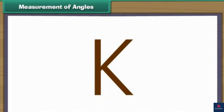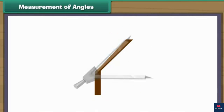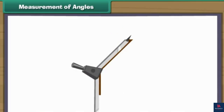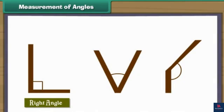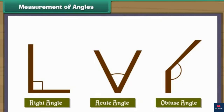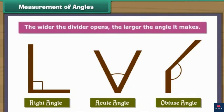Now consider the letter K of the English alphabet — let us modify it. Place the divider on the figure such that one of its arms and common point coincide with one of the arms and common point of the figure. The other arm of the divider lies to the right of the other arm of the figure, meaning the figure makes an angle greater than the right angle — that is an obtuse angle. Therefore, we can measure right, acute and obtuse angles with a divider. The wider the divider opens, the larger the angle it makes.